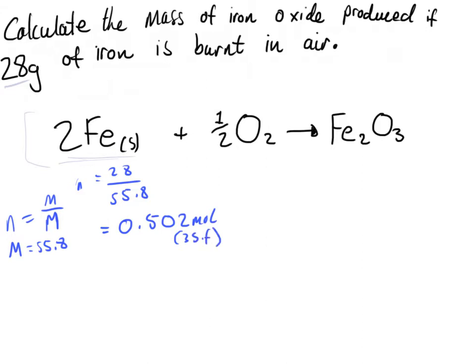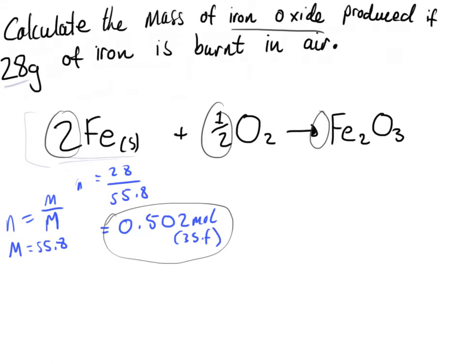Now we have the number of moles of iron. To work out the mass of iron oxide produced we look at the molar ratios. In a balanced equation we often have numbers before the various species. In this case Fe has no written number before it, but it is implicitly one. The molar ratio is basically the amount of one species compared to the amount of another.